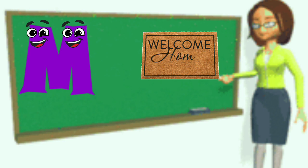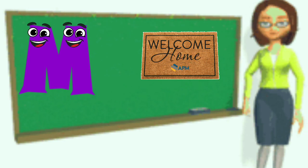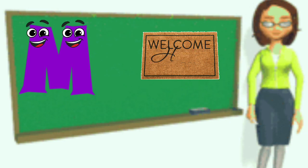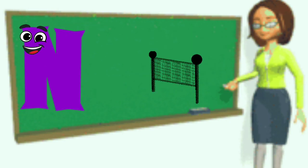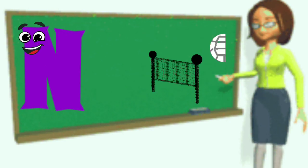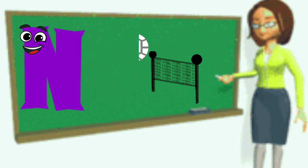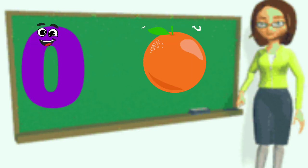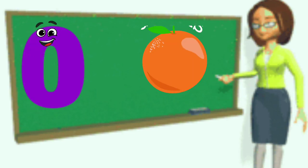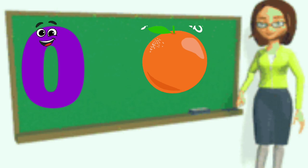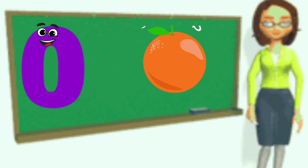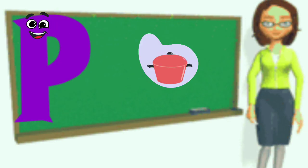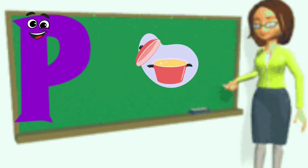M is for Mat, M-M-Mat. N is for Net, N-N-Net. O is for Orange, O-O-Orange. P is for Pet, P-P-Pet.